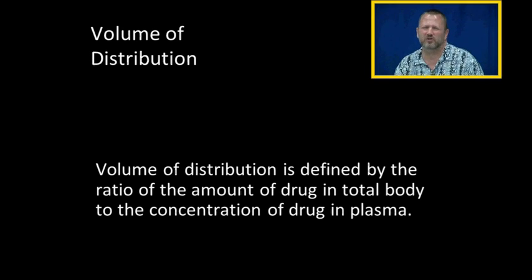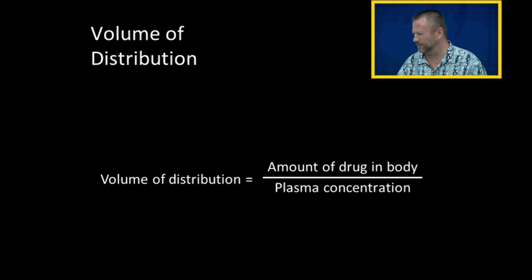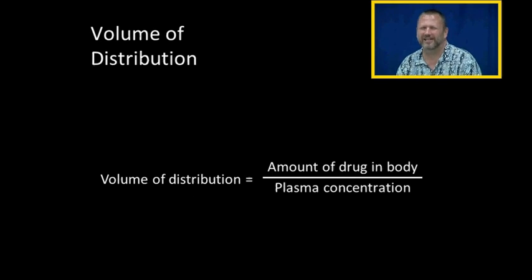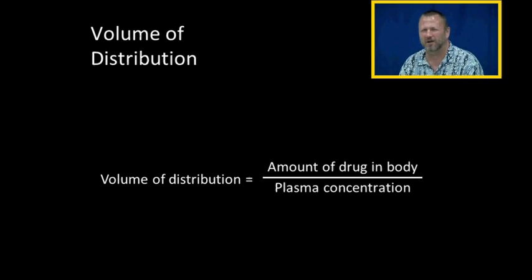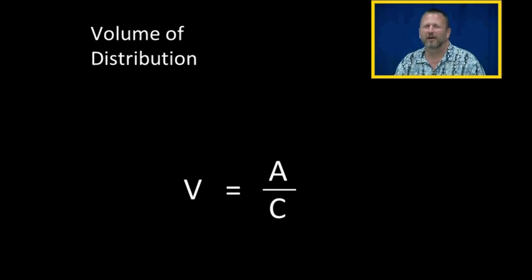The volume of distribution is defined by the ratio of the amount of drug in the total body to the concentration of drug in plasma. So the volume of distribution equals the amount of drug in the body divided by the plasma concentration, abbreviated as V equals A over C.